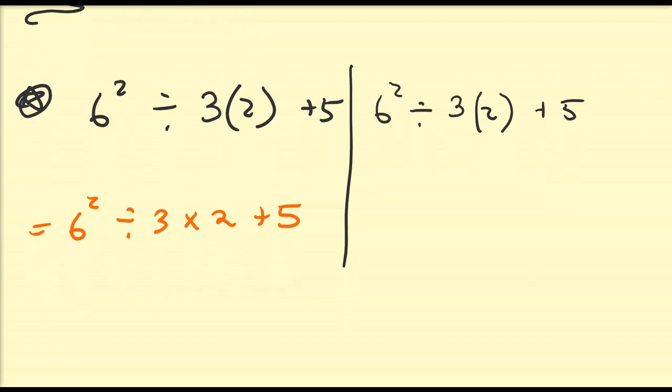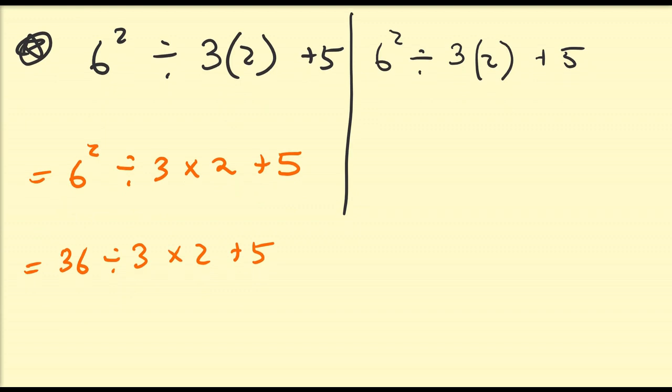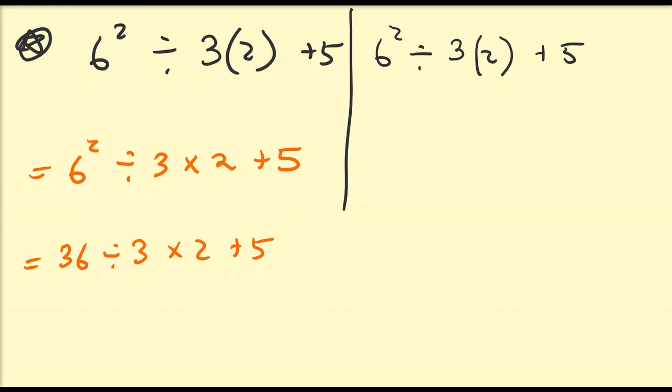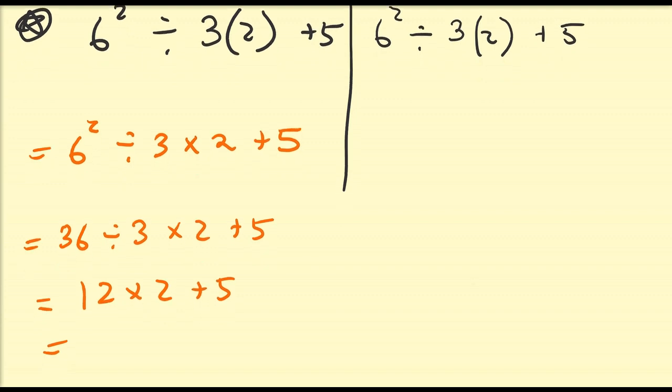By the order of operations, we need to do the exponents first. So that's going to be 36 divided by three times two plus five. And by the order of operations, we need to move from left to right. So 36 divided by three is going to be 12. And then we have 12 times two plus five. Multiplication comes before addition. So that's going to be 24 plus five. And then 24 plus five gives us an answer of 29.